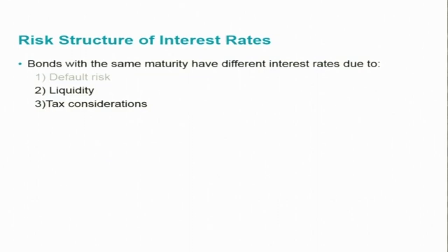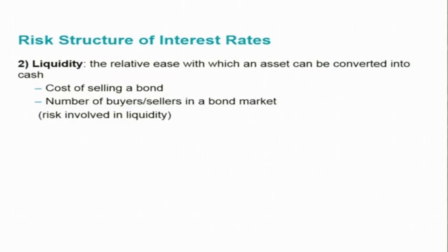We have now compared one aspect of the risk structure of interest rates — default risk. Let us now discuss the remaining two: liquidity aspects and income tax considerations. Liquidity, as defined in a previous session, is the relative ease with which an asset can be converted into cash without loss of time and value. This includes the cost of selling a bond; if the brokerage and fixed and variable costs involved in selling the bond are very high, the liquidity of the bond is very low.